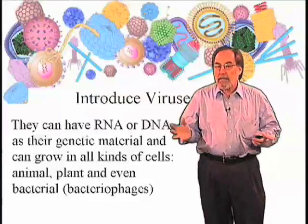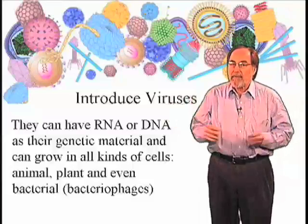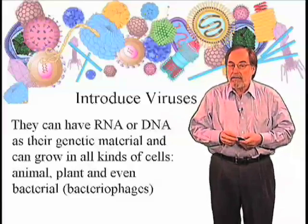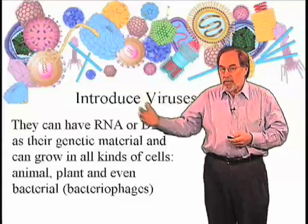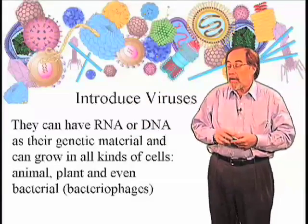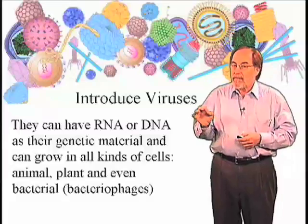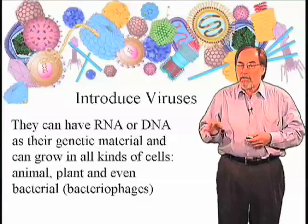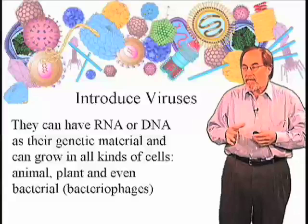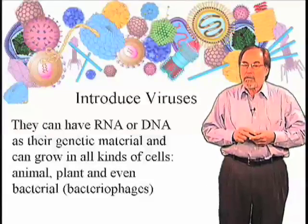Viruses have one of two kinds of genetic information, either RNA or DNA. This differentiates them from everything else in the living kingdom that all use DNA as their genetic material, that use DNA to send information from one generation to the next. Viruses can use RNA. RNA and DNA are very similar to each other chemically, but they're very distinct in how they are functioning in biological systems. It's interesting, and maybe even a remnant of an earlier world, that RNA can be a genetic material.